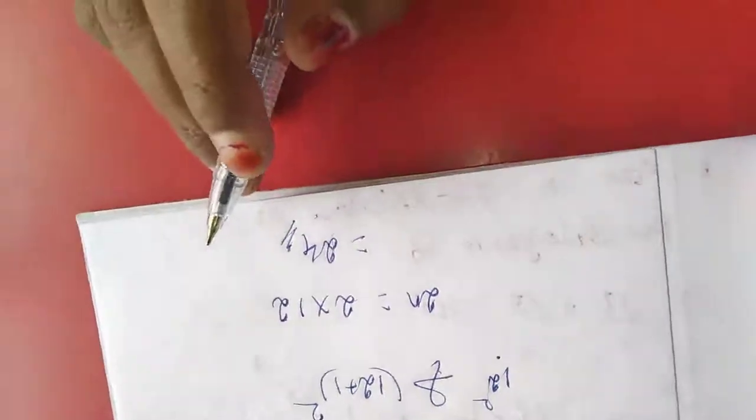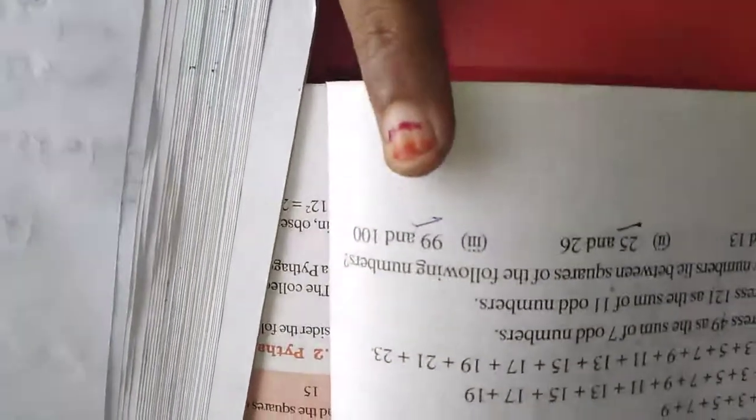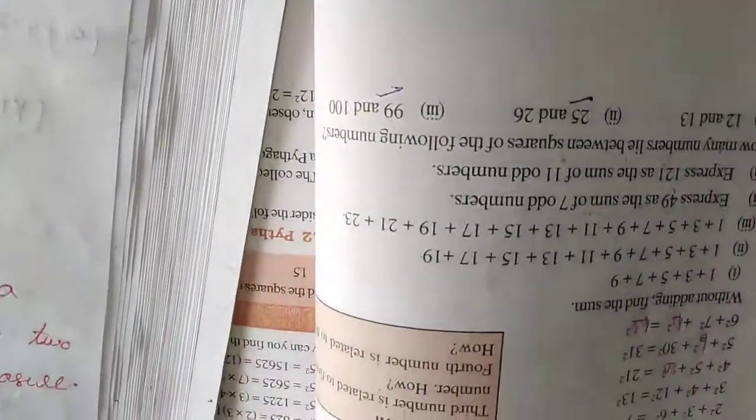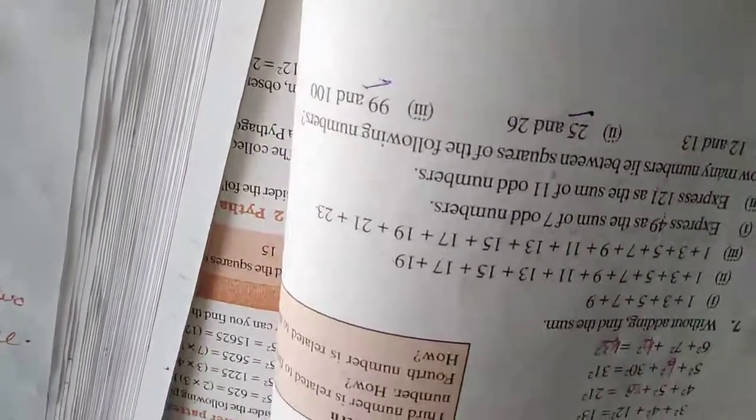Like this, we have to do the second sum and third sum. Second sum: n equals 25. Third sum: n equals 19. These two sums are homework for you. Up to this, exercise 6.1 is completed. Copy this in your note. Thank you.